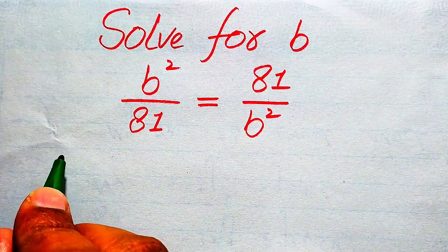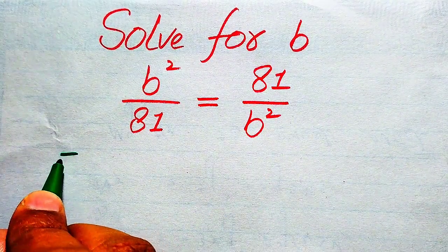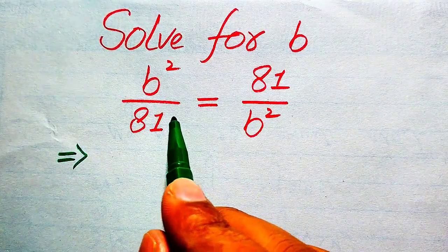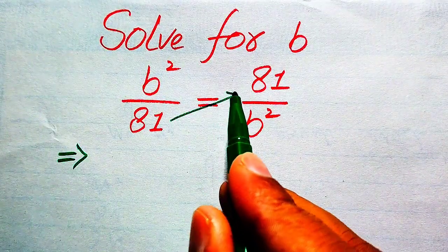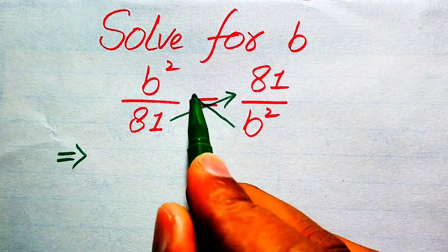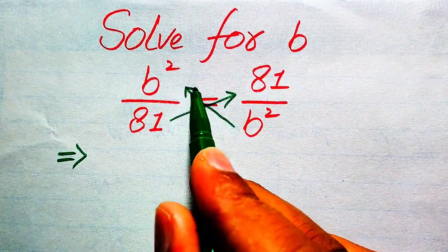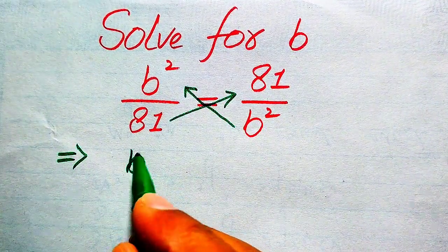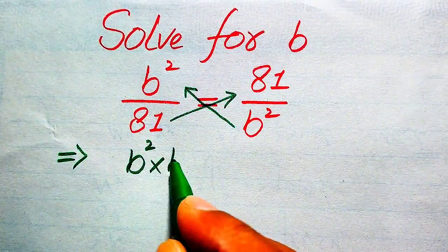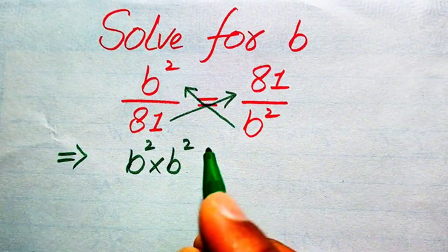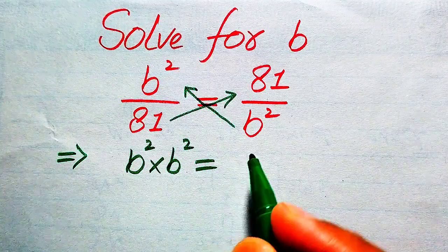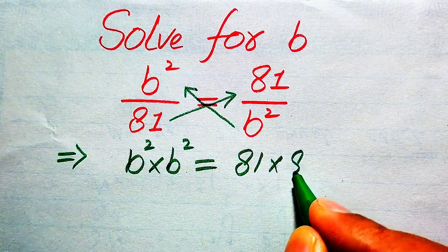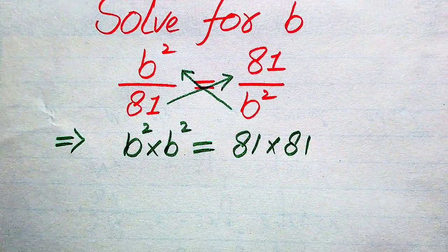The very first thing we are going to do is cross multiply the terms. We multiply 81 with 81 and we multiply b² with b². After cross multiplication, we have b² multiplied by b² equals to 81 multiplied by 81.